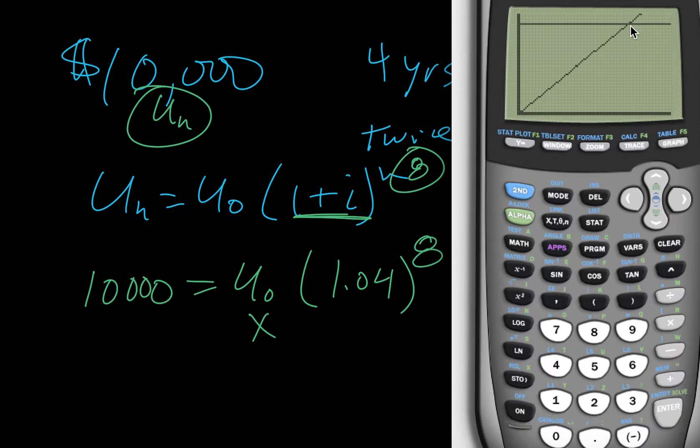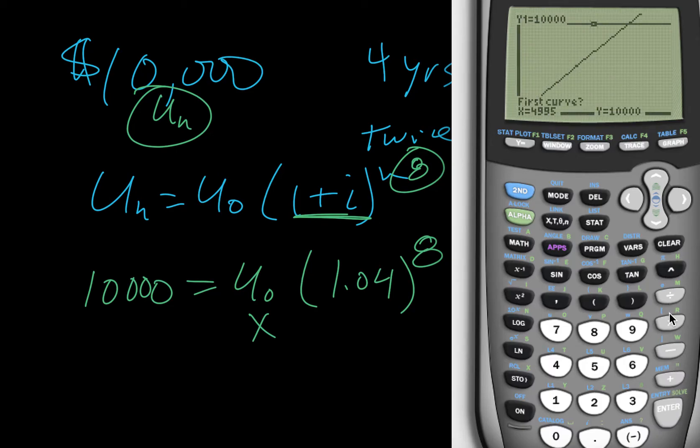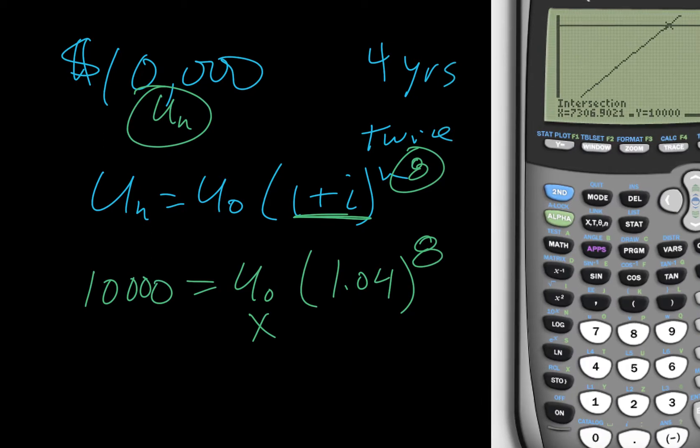All right, so right here, we actually could have done the sans break that I just realized. That's okay, though. So we're going to go 2nd calc, go down to intersect, 1st curve, 2nd curve, and we're going to guess where they cross, right there. And it says 7306.9, so we'll say 7307.